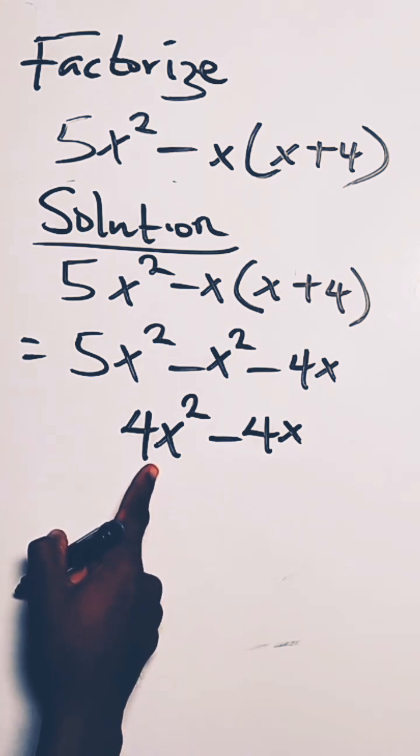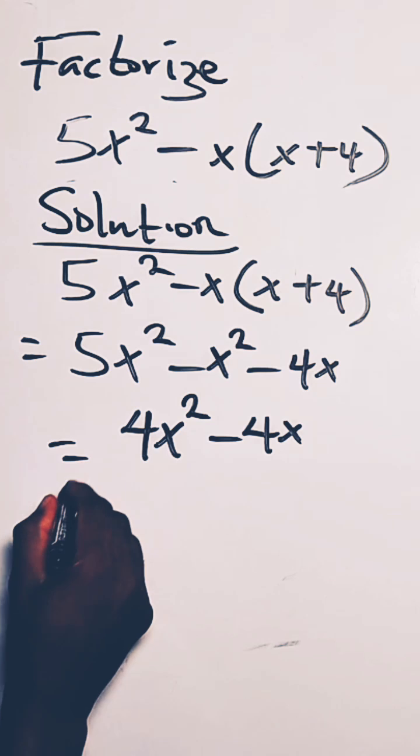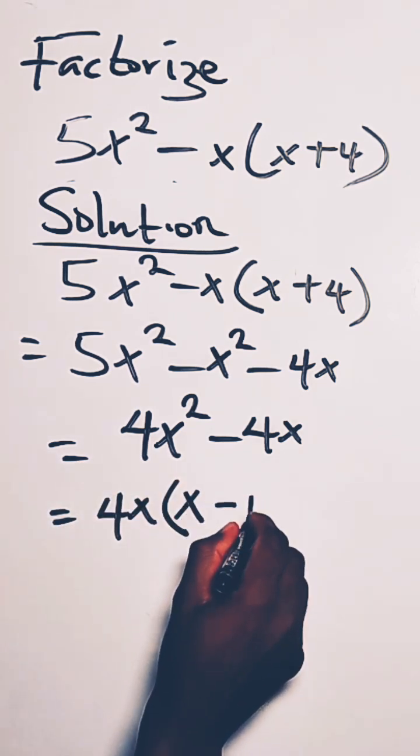So at this point we can factor out 4 and x. They are common. So we have this as 4x into x minus 1.